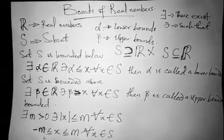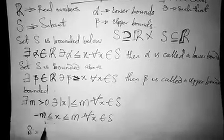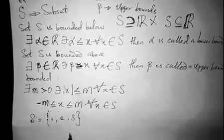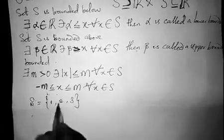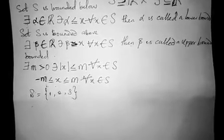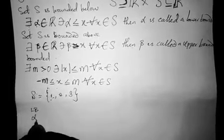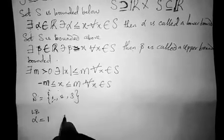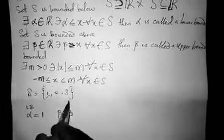Let's look at some examples. Let's say I have a set S equals {1, 2, 3}. Is this set bounded? Yes, the set is bounded, because it is bounded above and bounded below. The lower bound, represented by alpha, is 1, and the upper bound in this set is 3. So this set is bounded.